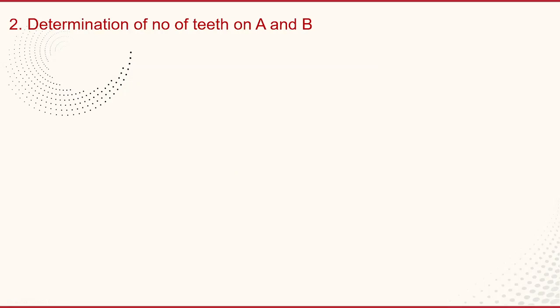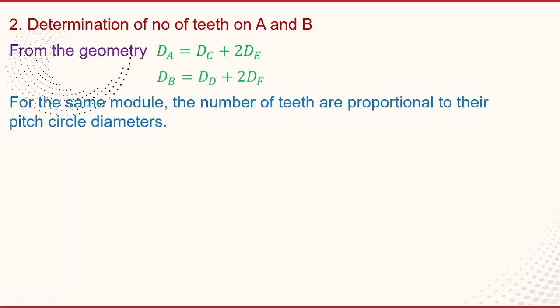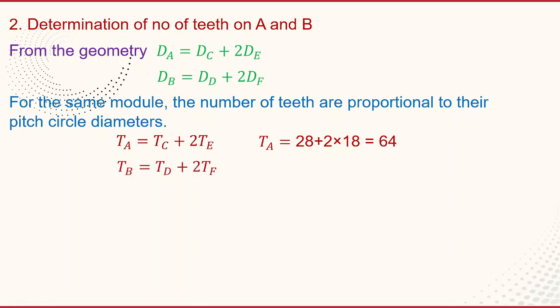We can determine the number of teeth on A and B. From the geometry, the diameter of gear wheel A equals the diameter of gear C plus two times the diameter of gear E: DA = DC + 2DE. Similarly, DB = DD + 2DF. For the same module, the number of teeth are proportional to their pitch circle diameters, so TA = TC + 2TE. Substituting the given values: TA equals 28 plus 2 times 18, giving TA equals 64. Similarly, TB = TD + 2TF, giving TB equals 62.